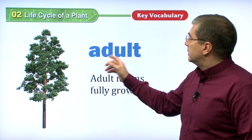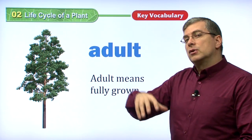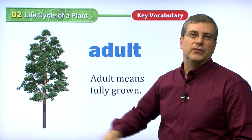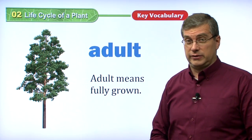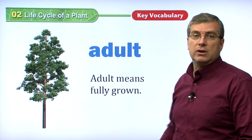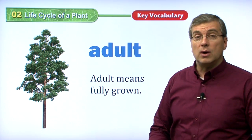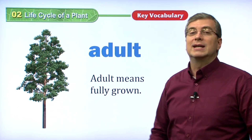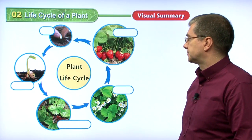An adult. We've talked about the seed and the seedling. After a long time, we have an adult. A tree takes a very, very long time to grow — some trees are hundreds of years old. Adult means fully grown. If it's an adult plant, an adult dog, or an adult human being, it means it is fully grown. It's in the final stage of growth.